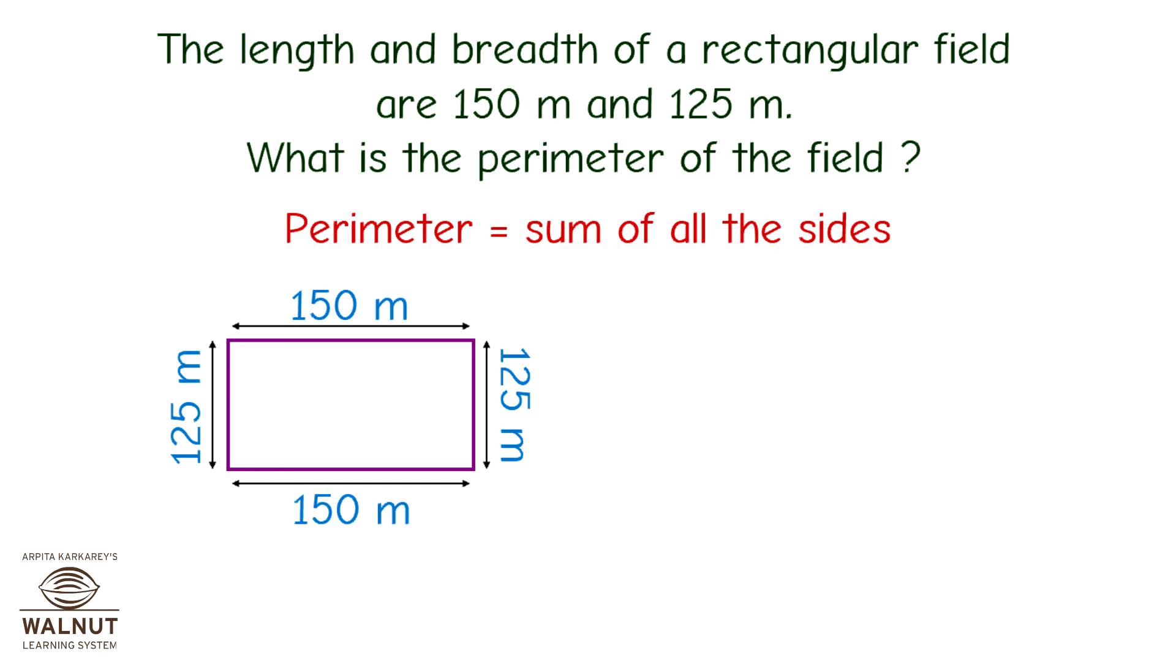Perimeter is equal to the sum of all the sides. So, that is equal to 150 plus 125 plus 150 plus 125. That is equal to 2 multiplied by 150 plus 2 multiplied by 125.